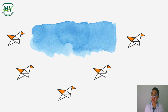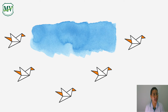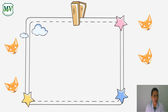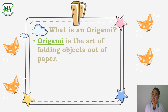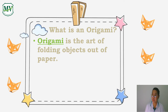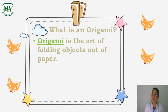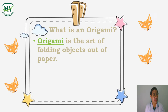Did you guess our lesson for today correctly? Correct! Very good. Today's lesson is all about origami. Now, what is origami? Origami is the art of folding objects out of paper. You may be familiar with origami, because origami is a type of art where we fold papers to form objects.